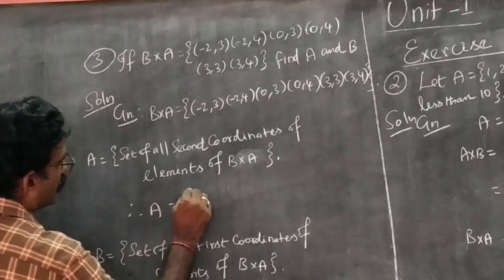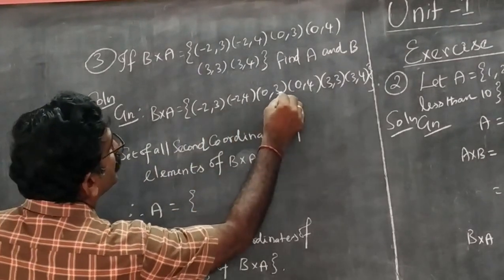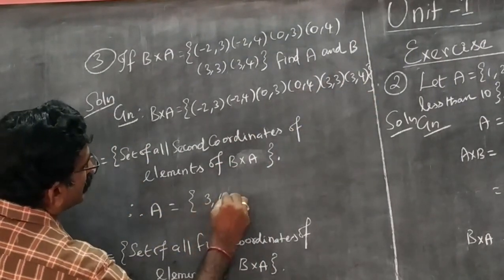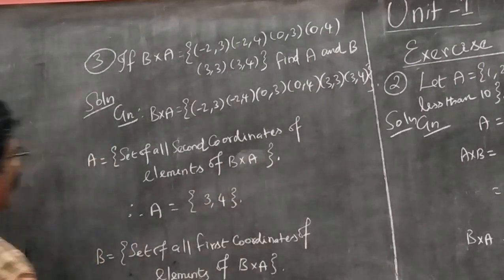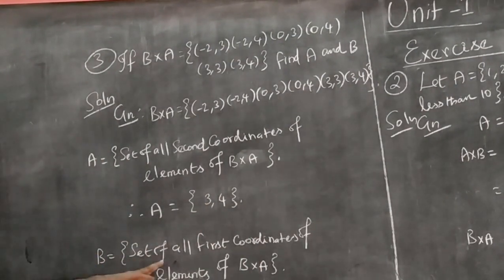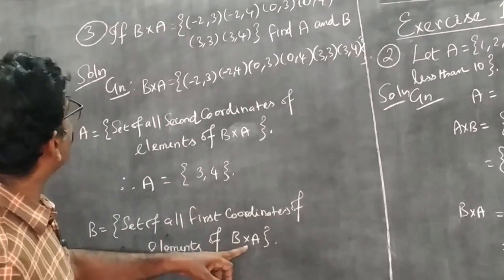What do we see here? 3, 4, 3, 4, 3, 4. So one time we can write it: {3, 4}. I get this. This is the set of all first coordinates of elements of B×A.